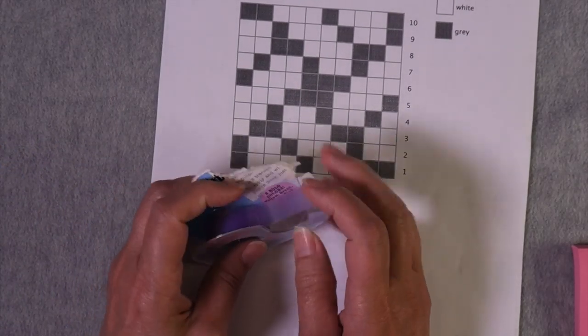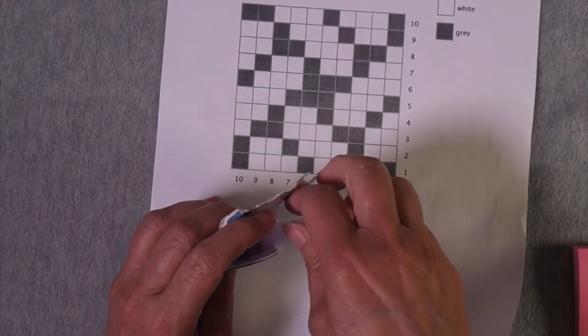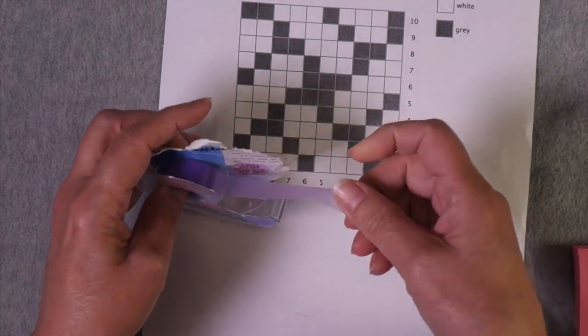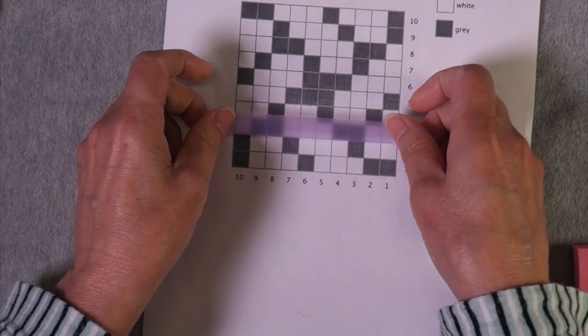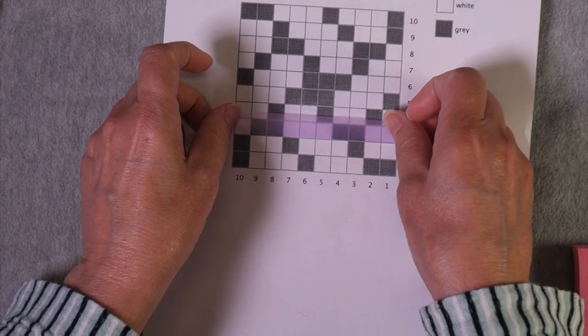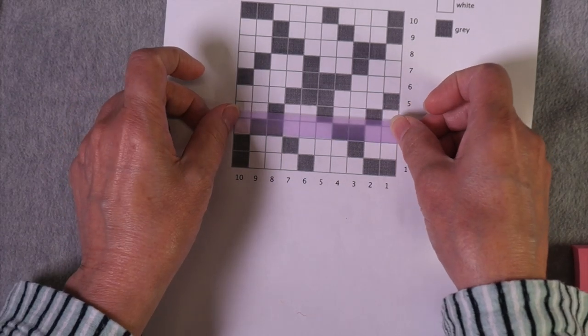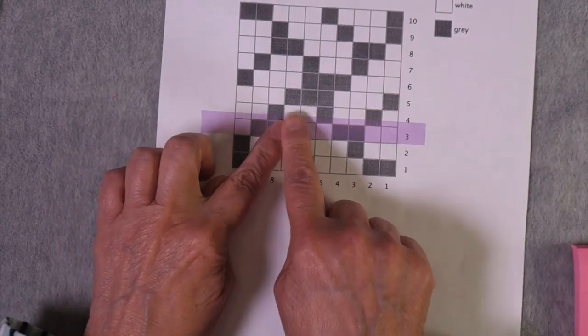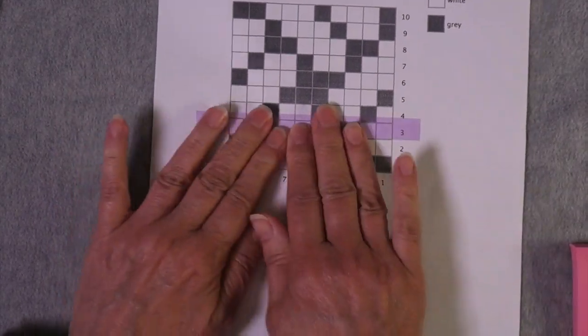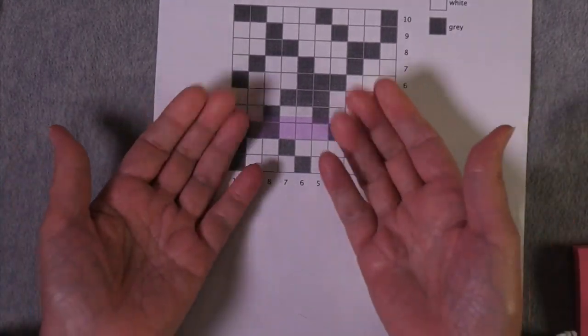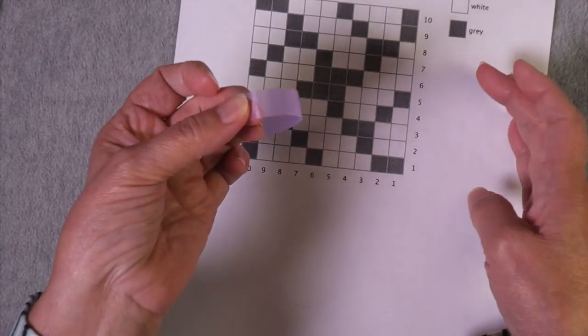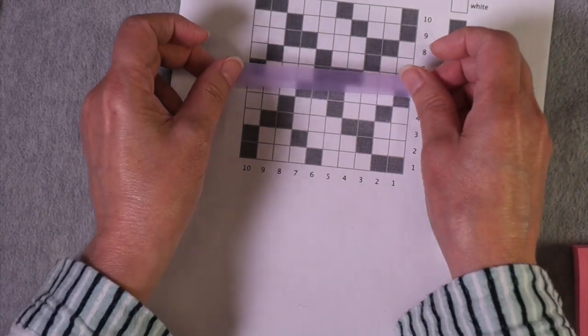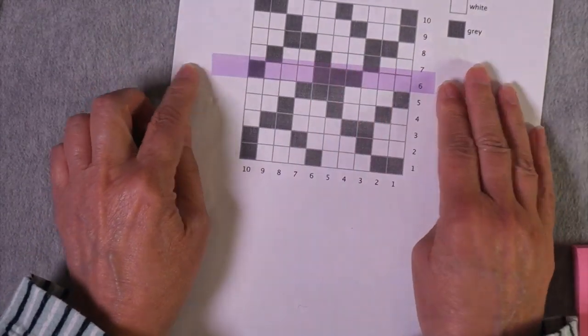An option I really like when I'm working with a hard copy of my chart is highlighter tape. So some yarn shops carry this. It's the same idea. You highlight the row that you are working on and this lies flush with the paper so it's not going to peel off. When you want to move it, it pulls off just like a post-it and then you can move it up to the next row and stick it down again.